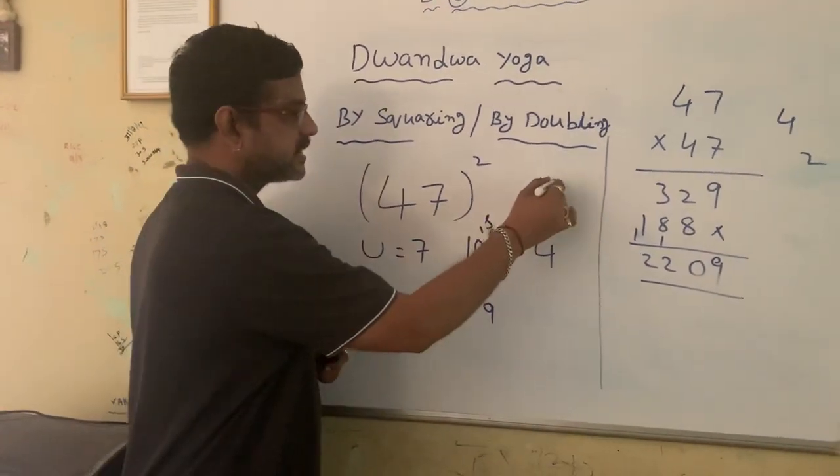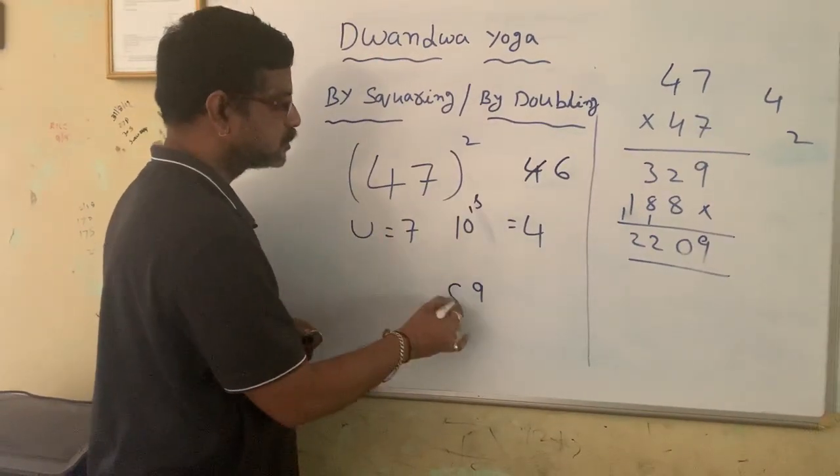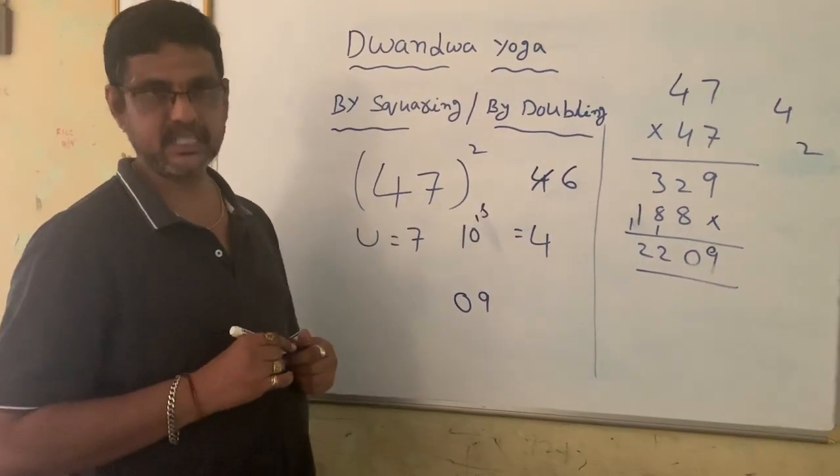That is 60, we will get 6 over there, 0 over here. Now last step, step 3.